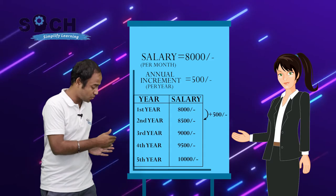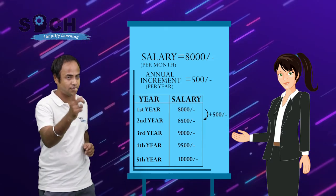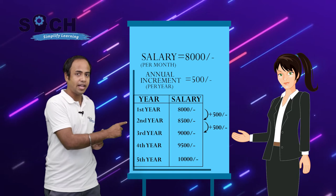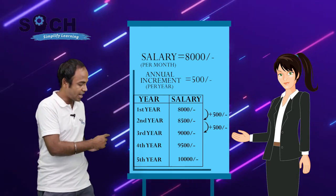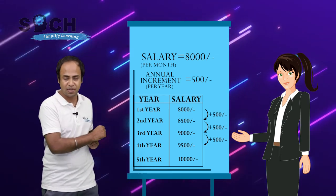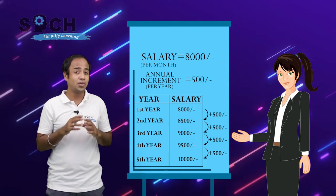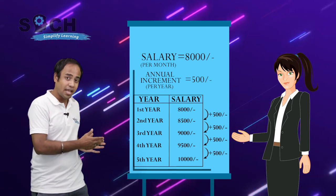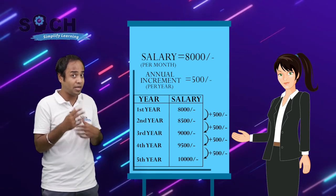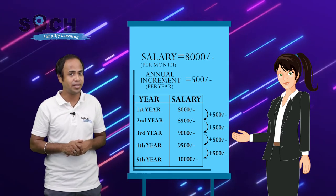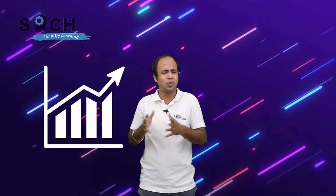From Rs. 8,000 to Rs. 8,500, there is an increment of Rs. 500. Again Rs. 500 added to Rs. 8,500 gives Rs. 9,000. Again Rs. 9,000 plus Rs. 500 gives Rs. 9,500. And finally Rs. 9,500 plus Rs. 500 becomes Rs. 10,000. This is how an A.P. looks like. A.P. is something which keeps on increasing with a fixed value.